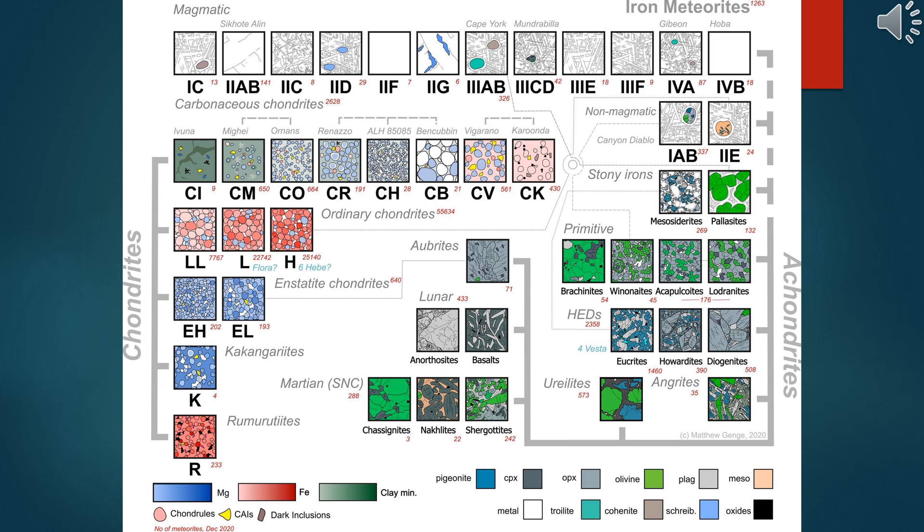Chemical composition analysis: use XRF spectroscopy or ICP-MS to determine the ratios of elements such as iron, nickel, magnesium and silicon. These ratios help in identifying the meteorite type. For example, chondrites generally have more iron-nickel than achondrites.